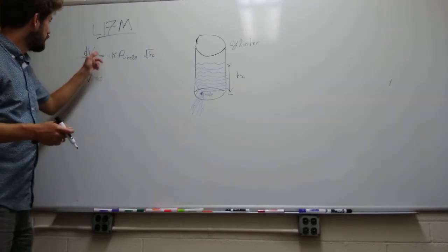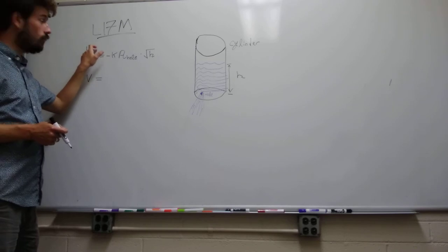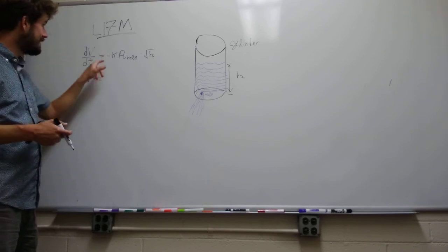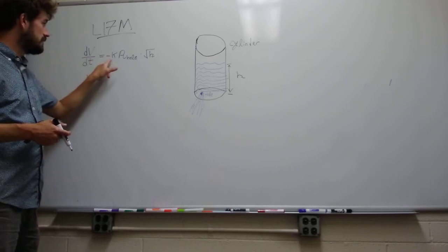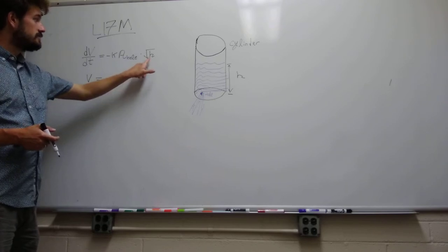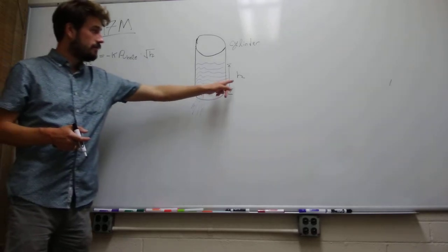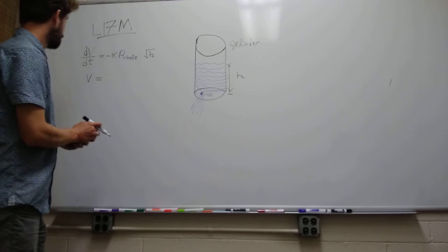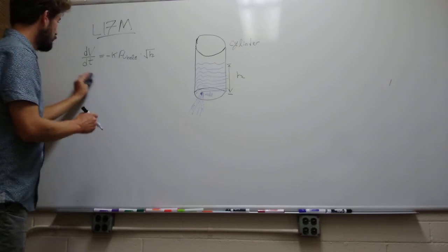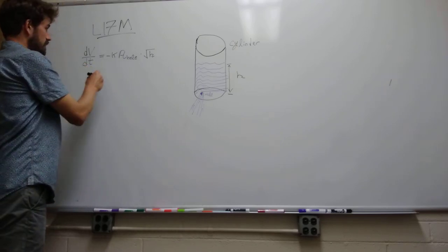The derivative — the rate at which the volume of the water coming out of the hole changes — is minus some constant times the area of the hole times the square root of h. Here h means the height of the water. So it's important in this equation, V,